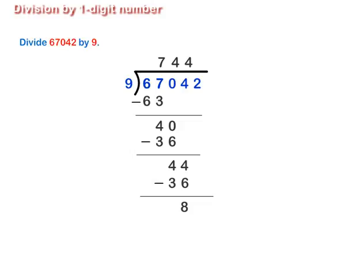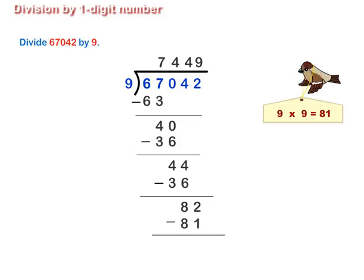Step 4. Lastly, bring down the next digit, that is, 2. The number now formed is 82. As 9 multiplied by 9 is equal to 81, so 9 divides 82 nine times. Write 9 next to 744 at the top and 81 below 82 and subtract.